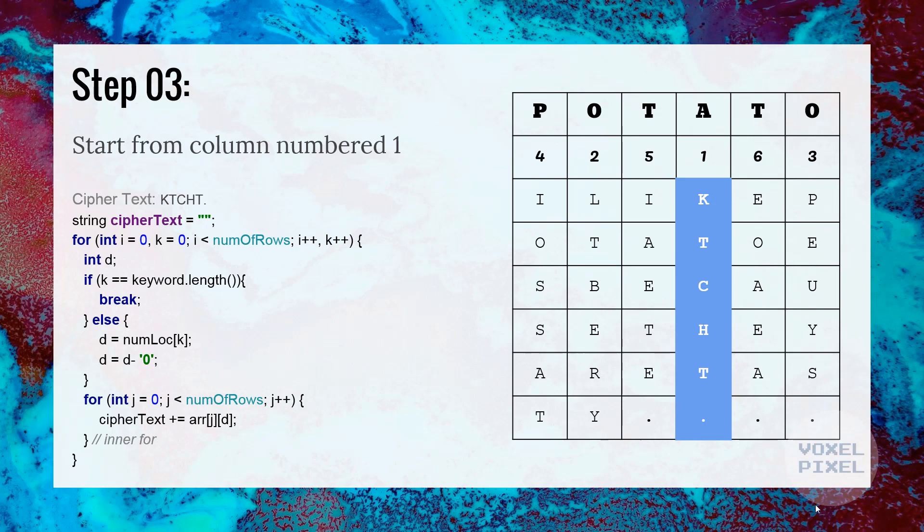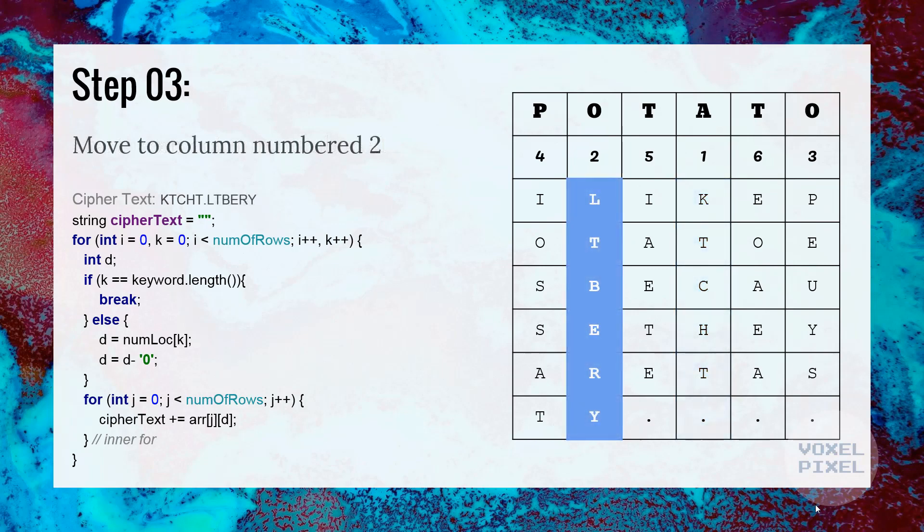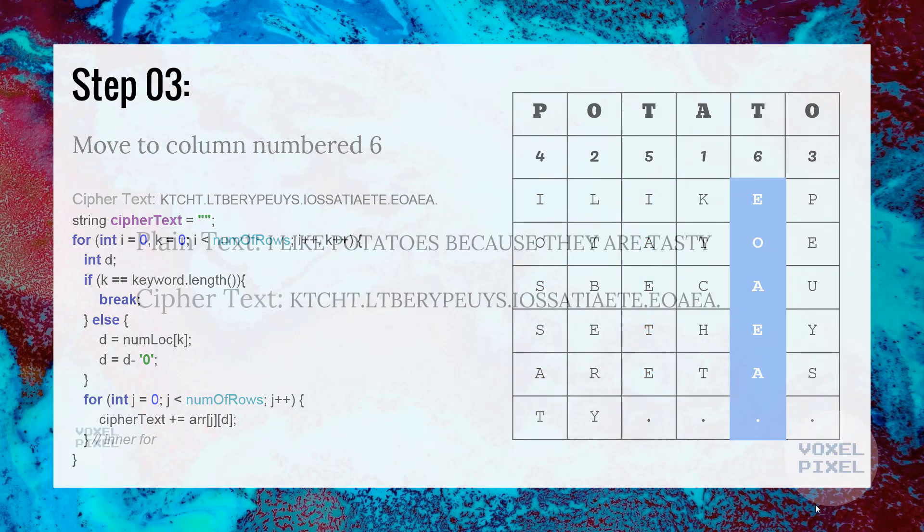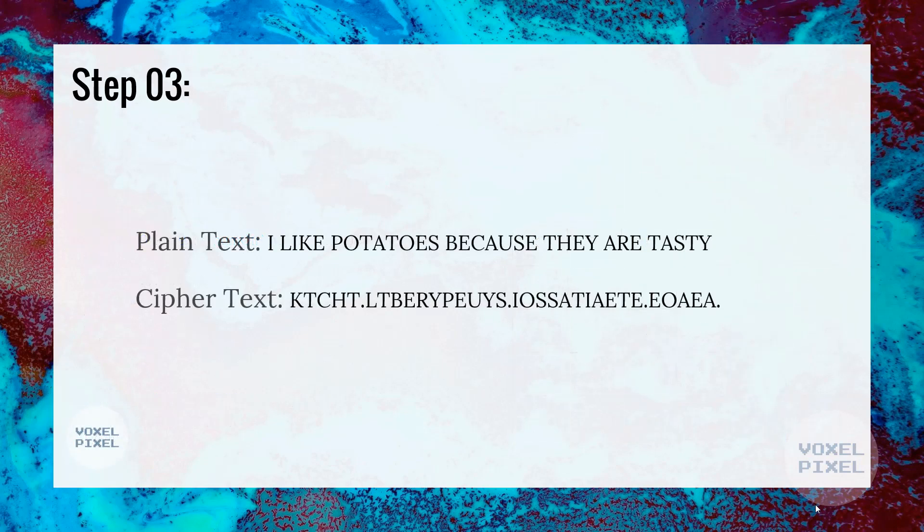We will write all of them next to each other. As you can see on the left side, next to ciphertext. Next, we will move on to the column number 2 and write its letters. We will keep on doing this till we reach the last column and we have obtained our ciphertext.